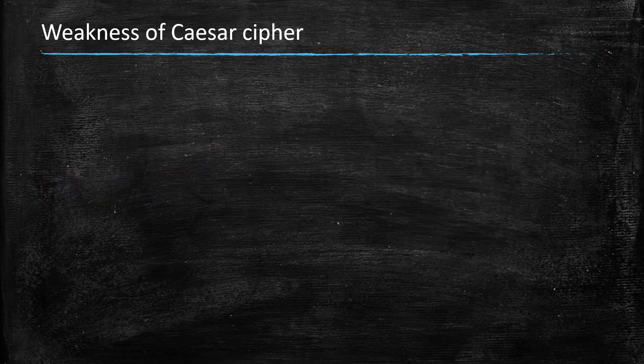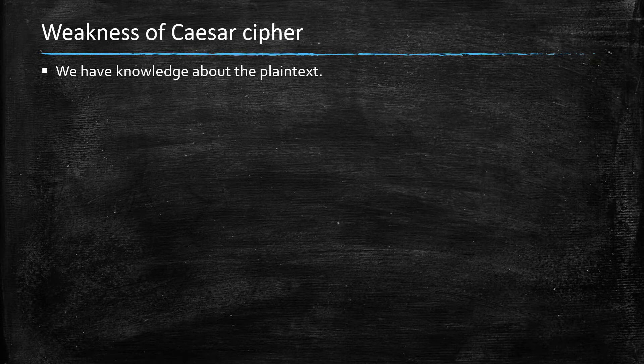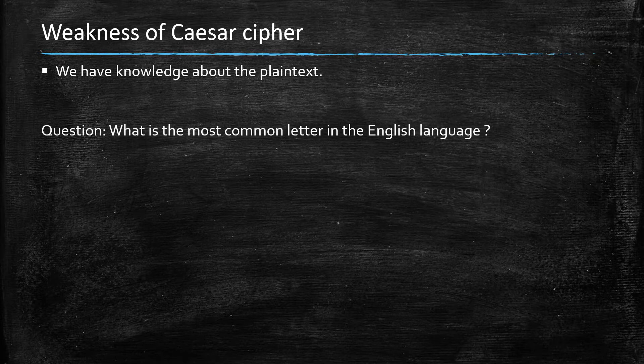Now the weakness of the Caesar cipher, besides the fact that the number of different shifts is very limited—basically the number of letters in the alphabet, so there's really essentially 25 different ways of non-trivial shifts—besides this, there is something more fundamental about the Caesar cipher that is insecure.